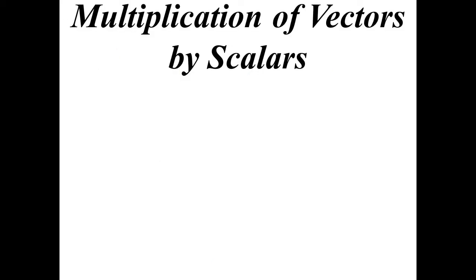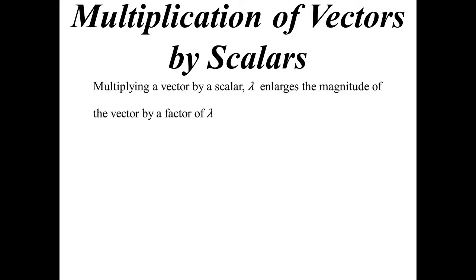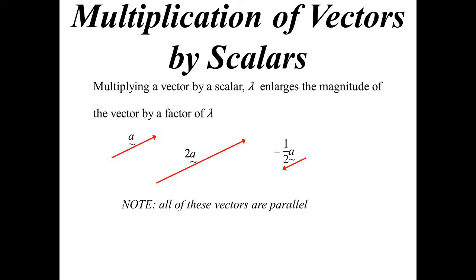How do we multiply? We don't actually multiply two vectors together yet. We multiply by scalars — we make them bigger or smaller. Multiplying by lambda will enlarge the length of that vector. There's vector a: double the length and it becomes 2a. Halve it and put it in the opposite direction and it's now minus a half of a. Notice all of them are parallel because they're just scalar multiples of the original vector — the direction stays the same; only the magnitude changes.